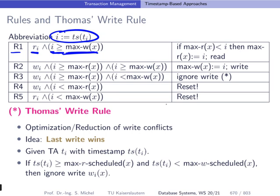Rule 5 covers the same read situation but with a different outcome: i is strictly smaller than max W scheduled of X, meaning the first bullet point kicks in and we must reject the operation, hence we abort transaction TI. Rule 2 addresses the write operation: since write potentially conflicts with reads and writes, we compare timestamp i to both max R scheduled and max W scheduled.